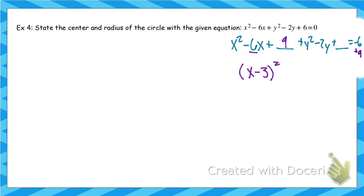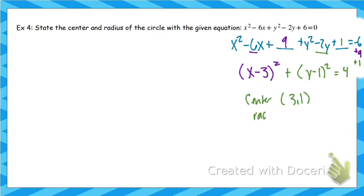Now for the y's — take the b value, divide by 2, and square it. That gives 1. Add 1 to both sides, and those y terms factor into y minus 1 squared. Now the equation is in standard form, so it's easy to find the center and radius. The center is (3, 1) and the radius is the square root of 4, which is 2. Completing the square is a harder algebraic step, but we'll do it a couple more times with ellipses and hyperbolas.